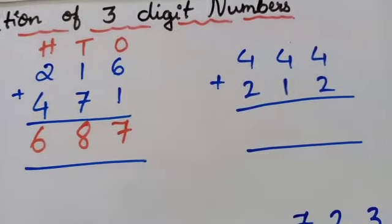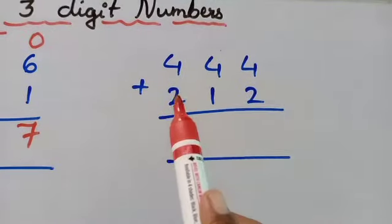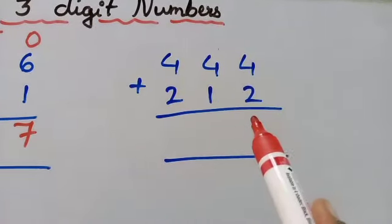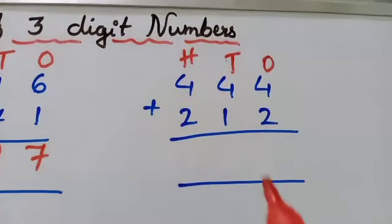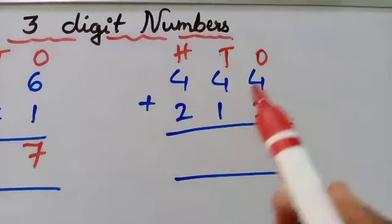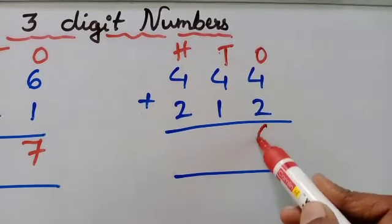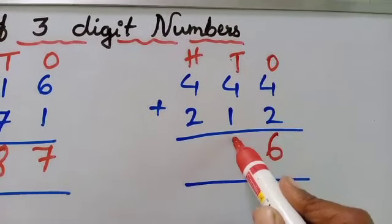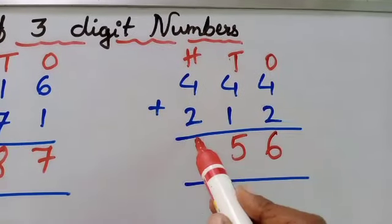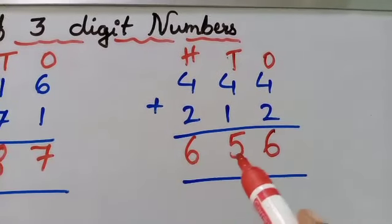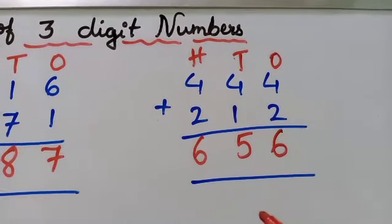Now let's go for the next example: 444 plus 212. We have to write ones place, tens place, and this is hundreds place — H stands for hundreds. Now start from ones place. 4 plus 2 — so 4 after 5, 6. Write 6 here. And 4 plus 1 is 5. And here 4 plus 2 is 6. So 656 is the total answer.